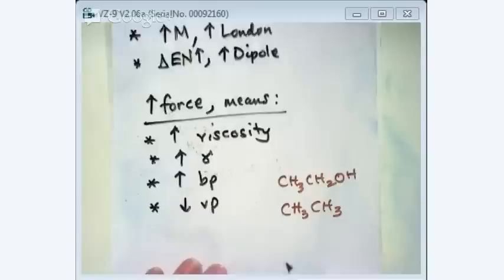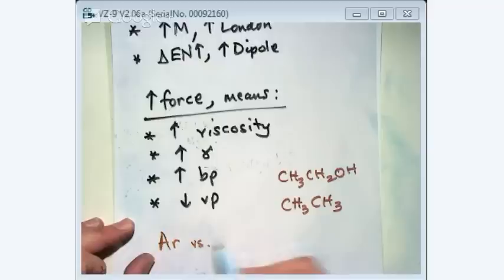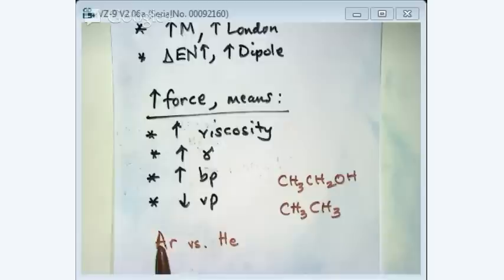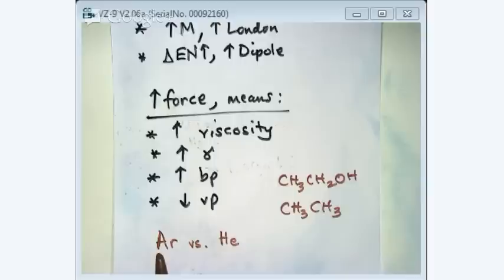Another example: argon versus helium — which has the lower vapor pressure? The left one, argon, because it has larger molar mass, so it has the higher London force. They both have London, but argon's is higher — so argon will have higher viscosity, higher surface tension, higher boiling point, and lower vapor pressure. That's the concept behind this section.